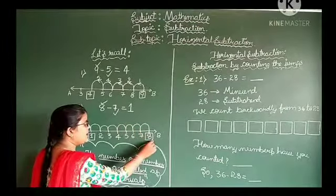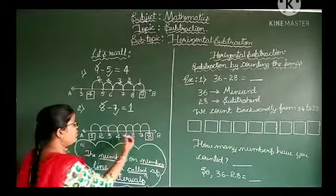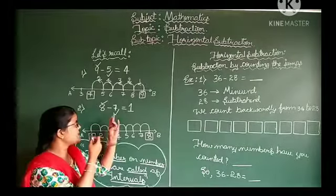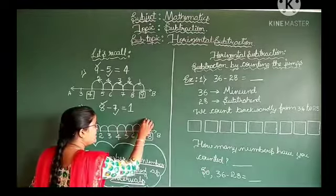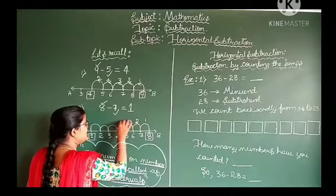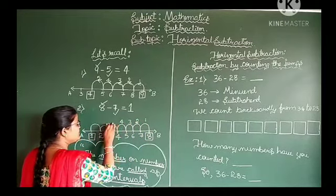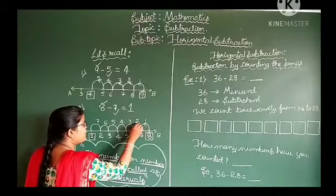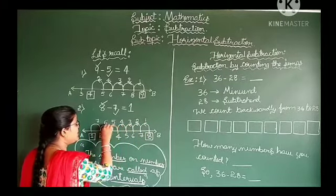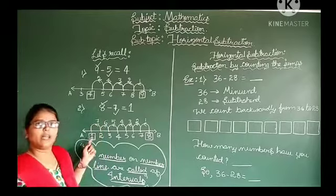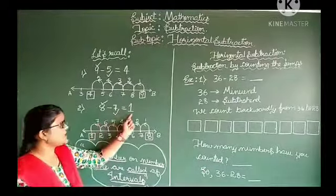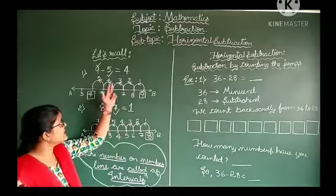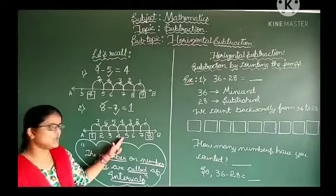First, mark the bigger number. Then move backwardly — to the left of the number line — 7 steps, because 7 is the smaller number: 1, 2, 3, 4, 5, 6, 7 — to the left. Then we reach one number. That number is called the difference. 8 minus 7 is equal to 1. This is all about our number line subtraction.